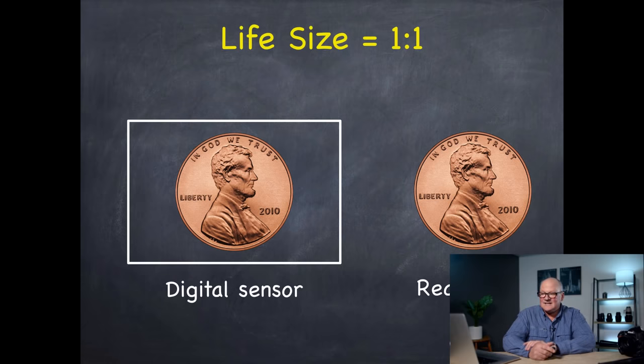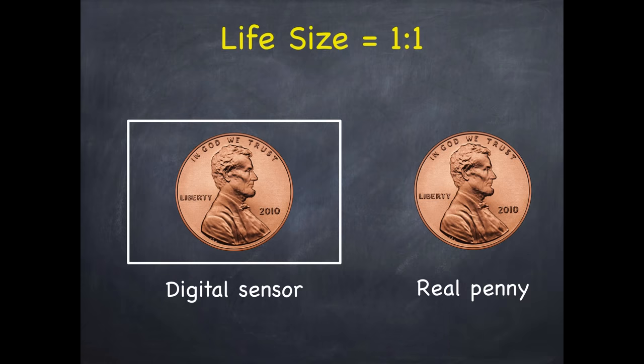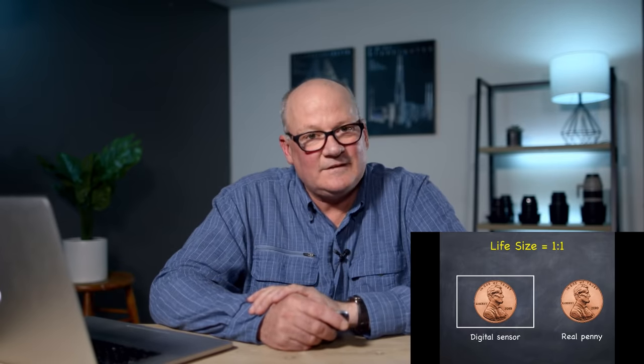If we look at what life-size is, we look at this digital sensor with a penny on it, and then we look at a real penny — they're both the same physical size. That's really where macro starts. Macro lenses are defined by that, because basically they can focus close enough so that those two physical sizes are the same. That's different from most lenses, because most lenses you can't get that close. We'll also talk about supplements that allow you to put things between the lens and camera to get even closer.